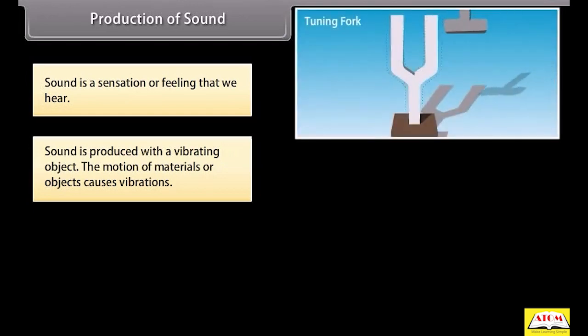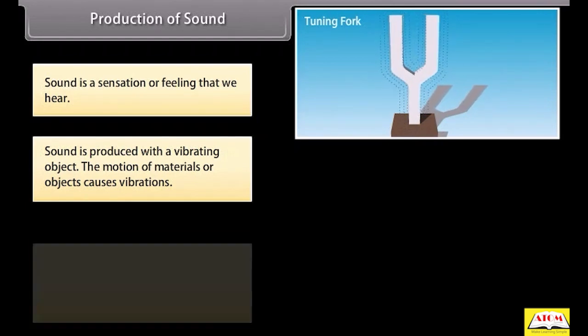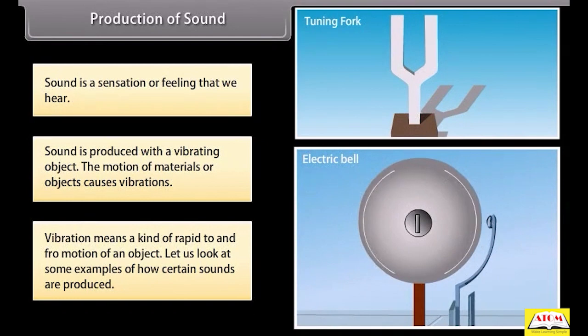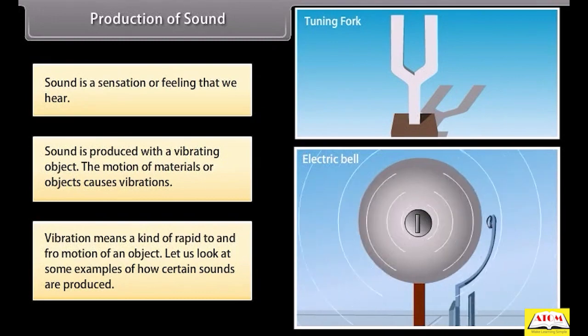Introduction of sound. Students, we know that sound is a sensation or a feeling that we hear. Sound is produced with a vibrating object. The motion of materials or objects causes vibrations. Vibration means a kind of rapid to and fro motion of an object. Let us look at some examples of how certain sounds are produced.